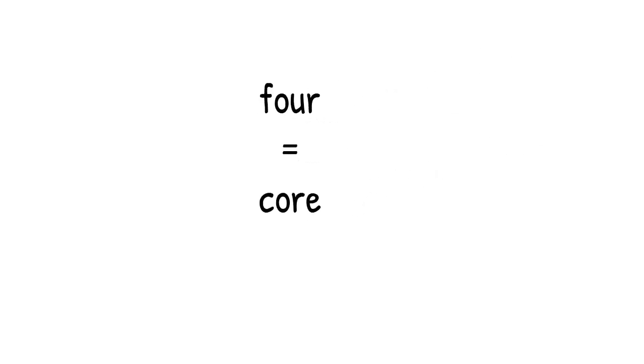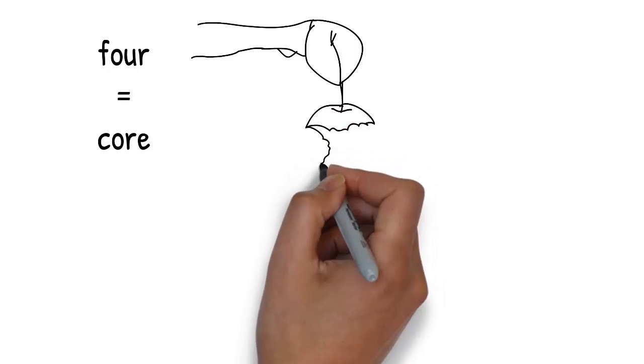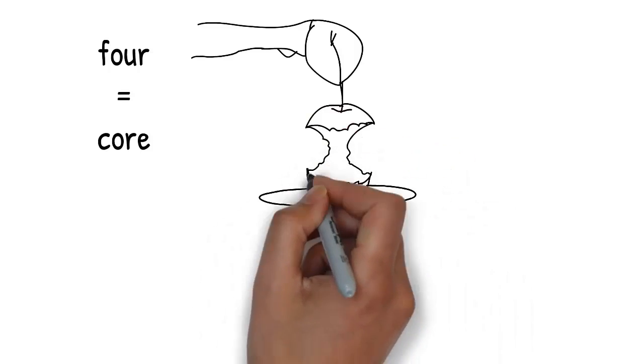Out of the magician's hat, does the cow pull a rabbit? No, it pulls an apple core. Core rhymes with 4.